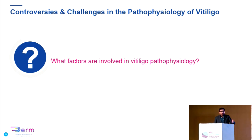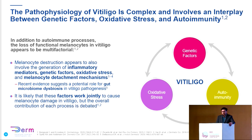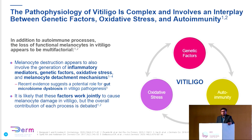Vitiligo is a complex disorder with multiple factors. It's polygenic, with multiple genetic risk factors. There are many triggering agents. Oxidative stress was discussed in the morning talk by Dr. Mauro Picardo. All of these factors contribute to melanocyte destruction, which we call vitiligo. There could also be certain melanocyte defects like melanocyte detachment, put forward by Dr. Gauthier, and other clinical morphological defects which can contribute.